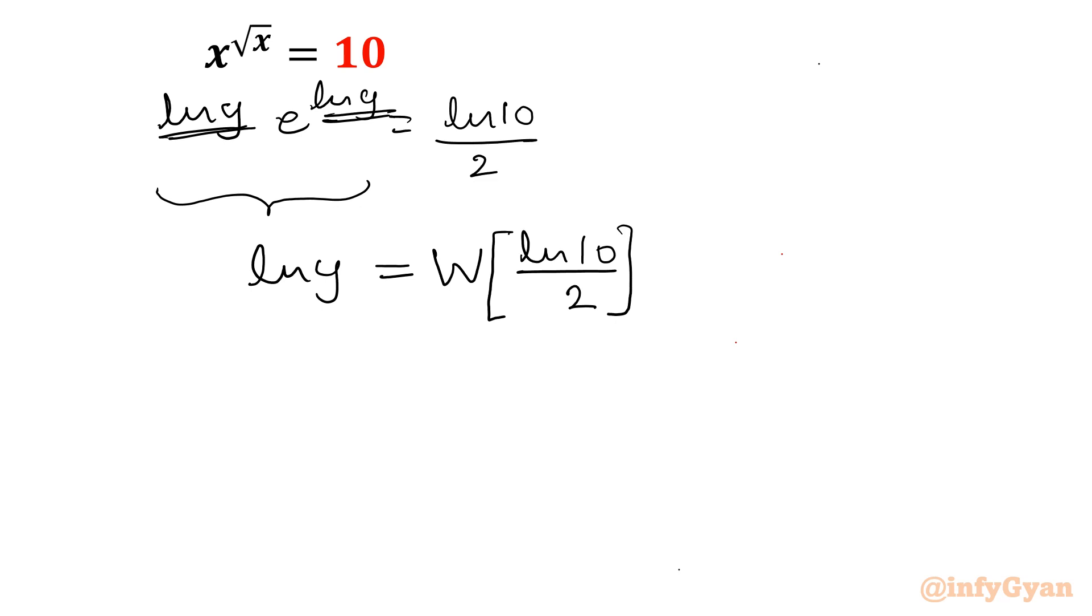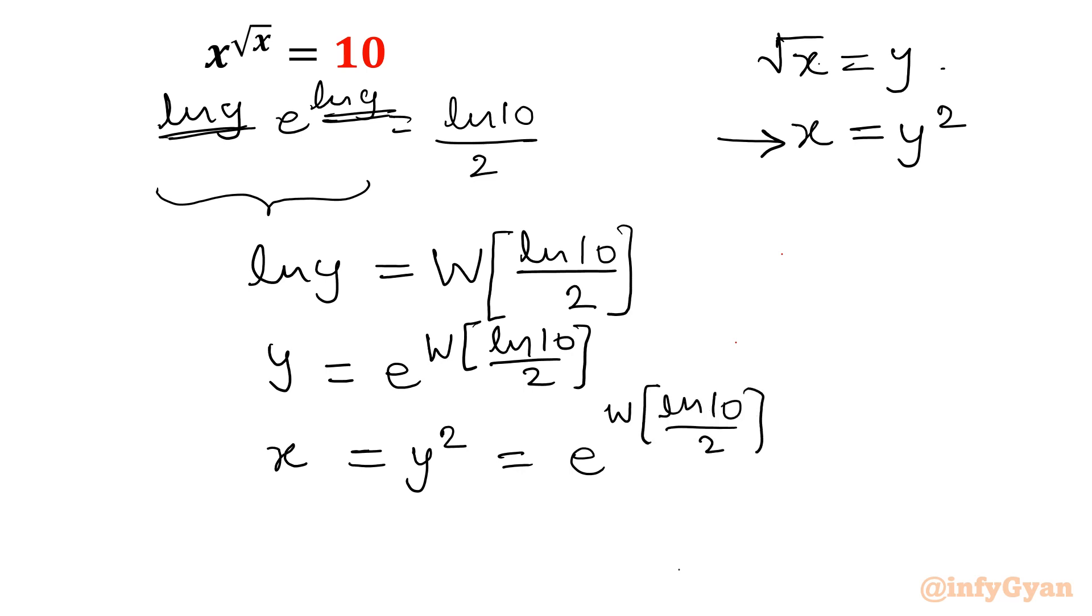Now from earlier equation, you can substitute ln y, or you can directly write value from here: y would be equal to e raised to the power w of ln 10 over 2. So our substitution was, we substituted root x equals y. So x value would be, we have to find out the value of x, so x would be equal to y squared. That means our x value would be e raised to the power w function ln 10 over 2, that whole squared.